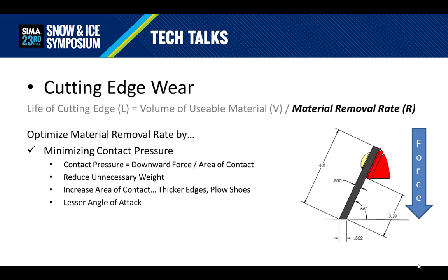Now that we've outlined the variables, let's talk about the tactics we can use to minimize them and optimize the material removal rate. The first is minimizing contact pressure. Contact pressure is a function of the downward force over the area of contact. The greater the downward force, the greater the contact pressure and the faster the material will be removed. Removing unnecessary weight from the plow can help — for example, choosing a smaller deflector. Increasing the area of contact can also be impactful: thicker edges mean more surface area. Plow shoes can also add significant contact area and reduce overall pressure and removal rate. Finally, a lesser angle of attack can increase the cutting edge surface in contact with the ground and help slow the removal rate.